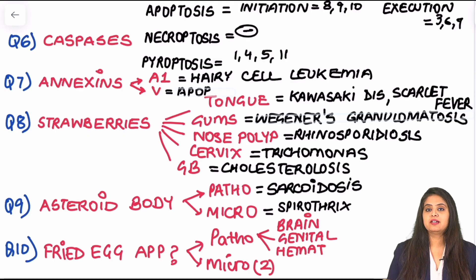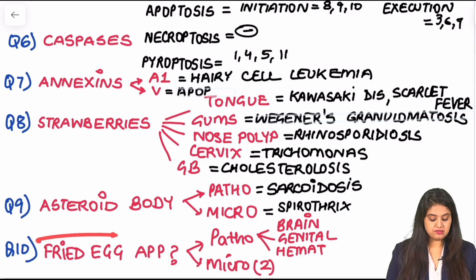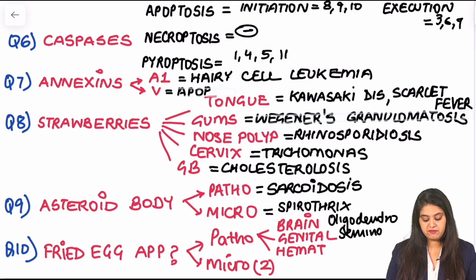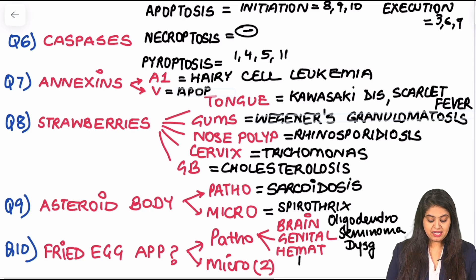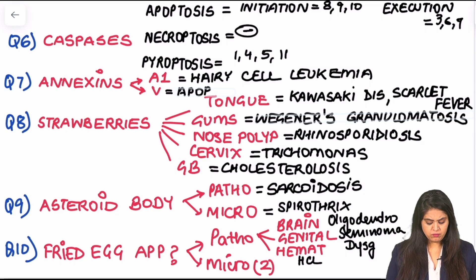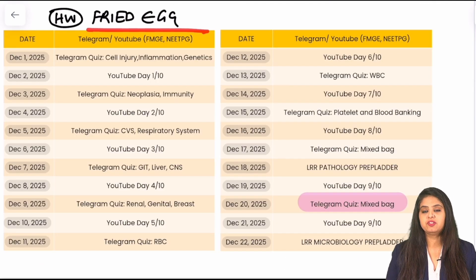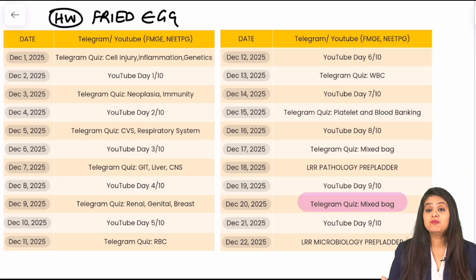So many one-liners done. Now, fried egg appearances: in pathology for a brain tumor — oligodendroglioma. In genital tumors — seminoma for the testis and dysgerminoma for the ovary. In hematology — hairy cell leukemia on bone marrow biopsy. Homework: which two microbiology organisms — one fungus and one bacterium — also show fried egg appearance? That's one of the easiest homework questions you have.